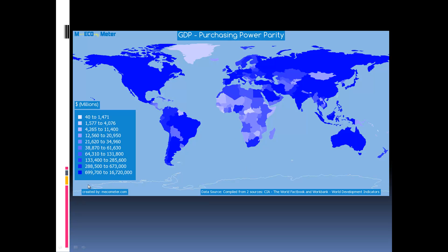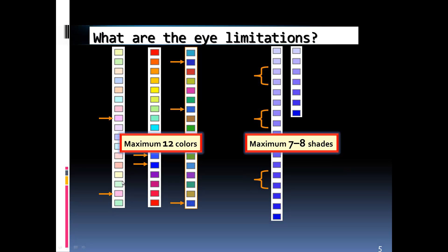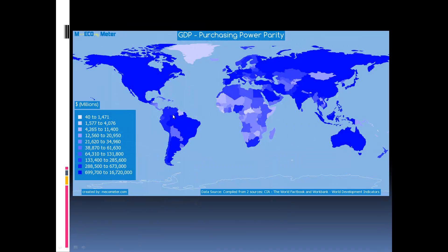So how do we address this issue when making maps? One thing to keep in mind is the eye's limitations. The eye can see a maximum of 12 different colors, but when it comes to shades of the same color, you can only really see about seven to eight. If you use completely different colors you can increase the number of categories a bit, but when using shades, seven to eight is the maximum. Having up to 10 shades makes it very difficult to see color differences and relate them to the legend.